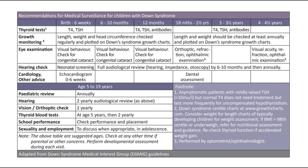For medical surveillance in Down syndrome, thyroid function tests should be done at birth or within 6 weeks, then at 1 year old and 3 years old to screen for hypothyroidism. Growth monitoring is checked regularly and plotted on a Down syndrome growth chart, with length and weight checked at least annually after 18 months. Eye and hearing examinations are also frequently done, along with echocardiogram at birth and dental assessment.